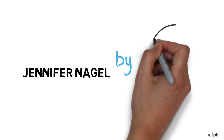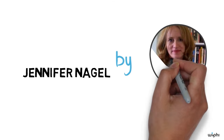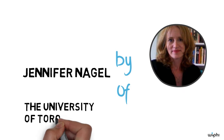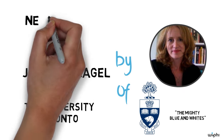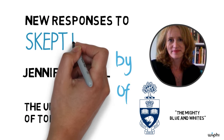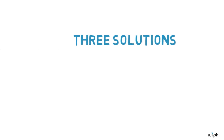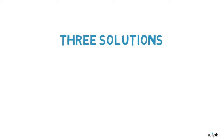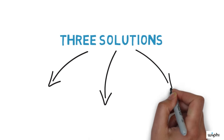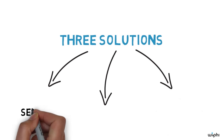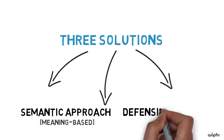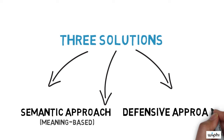My name is Jennifer Nagel. I teach philosophy at the University of Toronto, and today I want to talk to you about several new ways contemporary philosophers tackle the problem of skepticism. This video covers three different proposed solutions to the skeptical problem. The first two are semantic or meaning-based approaches, and the third is a strategy we'll call the defensive approach.